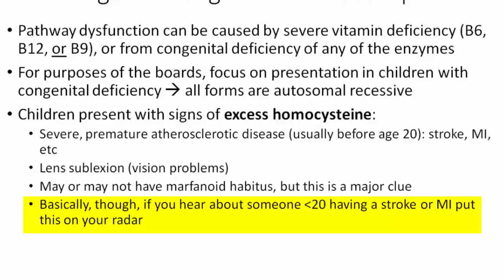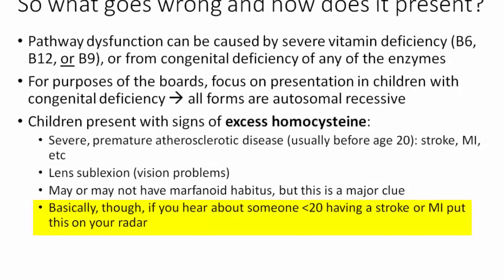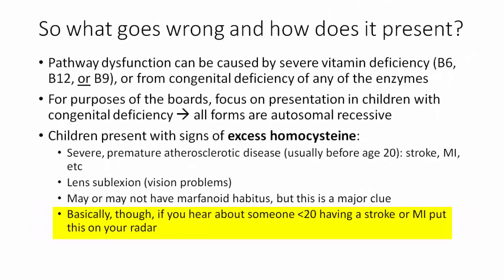If you hear about young children described that way, this should be on your radar. But basically, if you hear about someone under the age of 20 having a major stroke or heart attack, you need to be thinking about the homocysteine pathway.